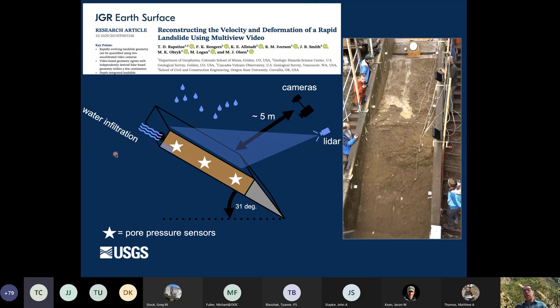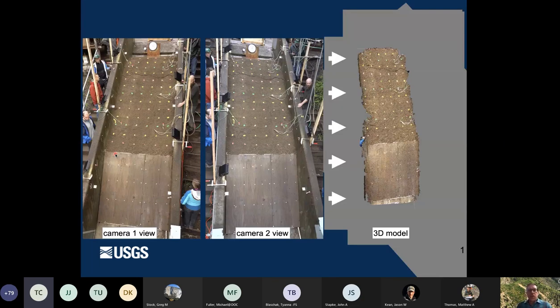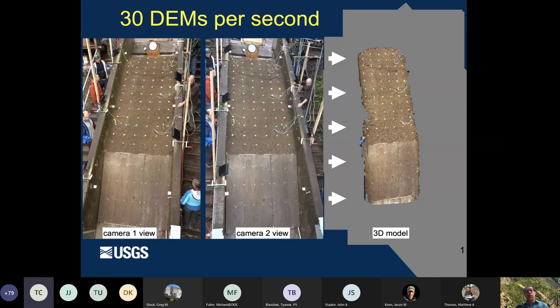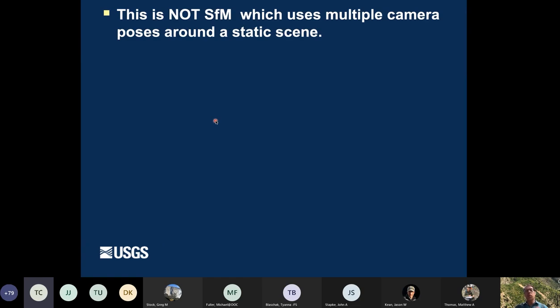So that's the video of the landslide initiated debris flow. And so Thomas Reichstein, our student that was working on this, he took the two fixed cameras and so you can see camera view one and camera view two here. And they were recording at 30 frames per second. And what he was able to do is to create a digital elevation model for each of those frames. So he was able to create 30 digital elevation models per second.